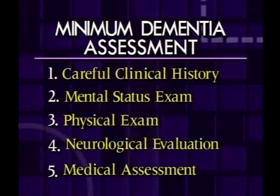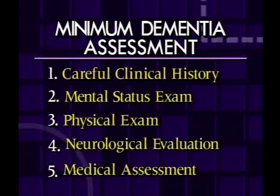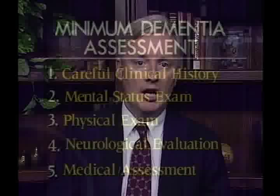What is the minimum dementia assessment? There are five parts to it. First, you have to do a careful clinical history. Then you have to do a thorough mental status examination, because it is the mental status exam that is pivotal in the diagnosis. Next, you need to perform a physical examination to exclude physical causes of confusion. Next, you need to do a neurological evaluation — it will exclude some physical causes and also provide clues as to the type of dementia. And lastly, certain laboratory tests need to be done in every patient to exclude treatable disorders like vitamin deficiencies or thyroid disorder.